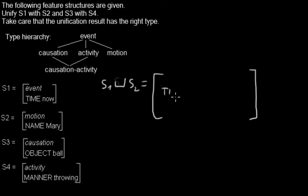So in this case, time from S1 with a value and name from S2 with a value, and more importantly, the unification will have a special type.